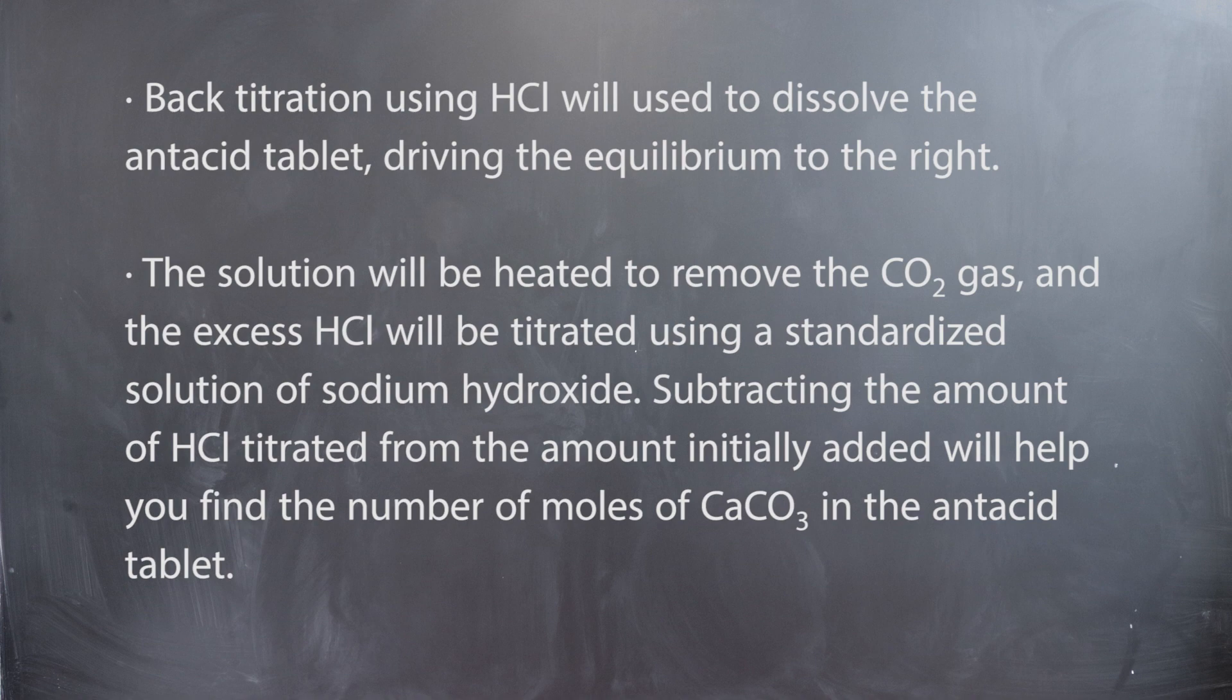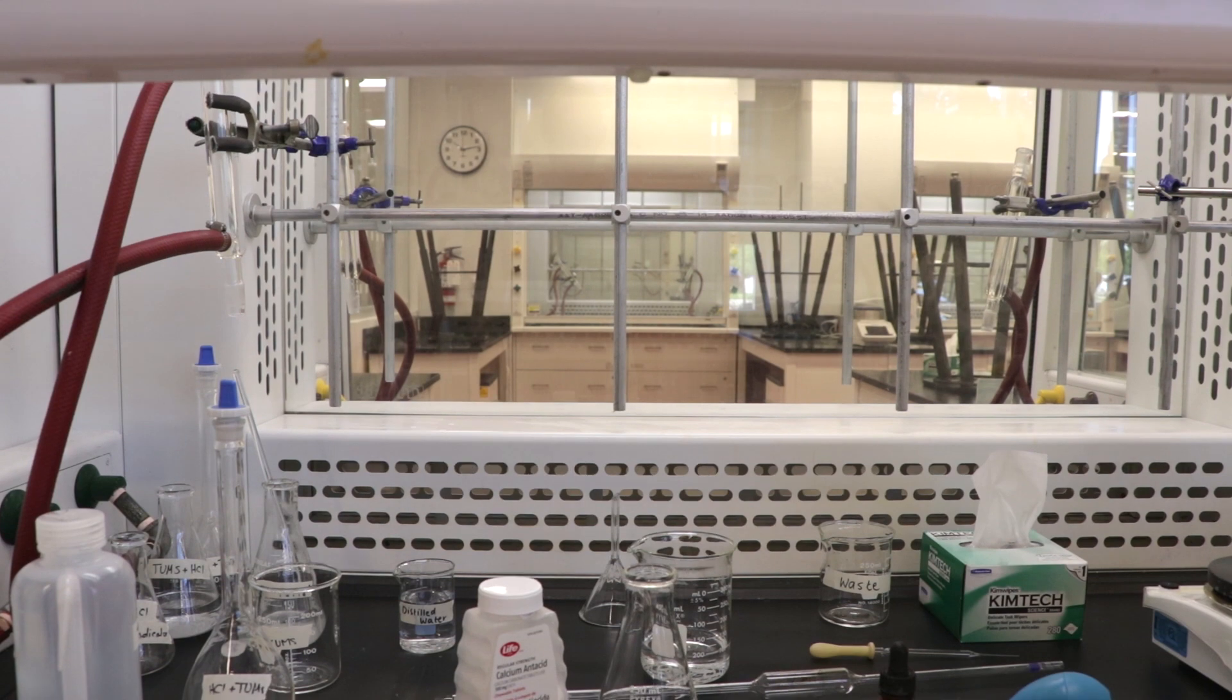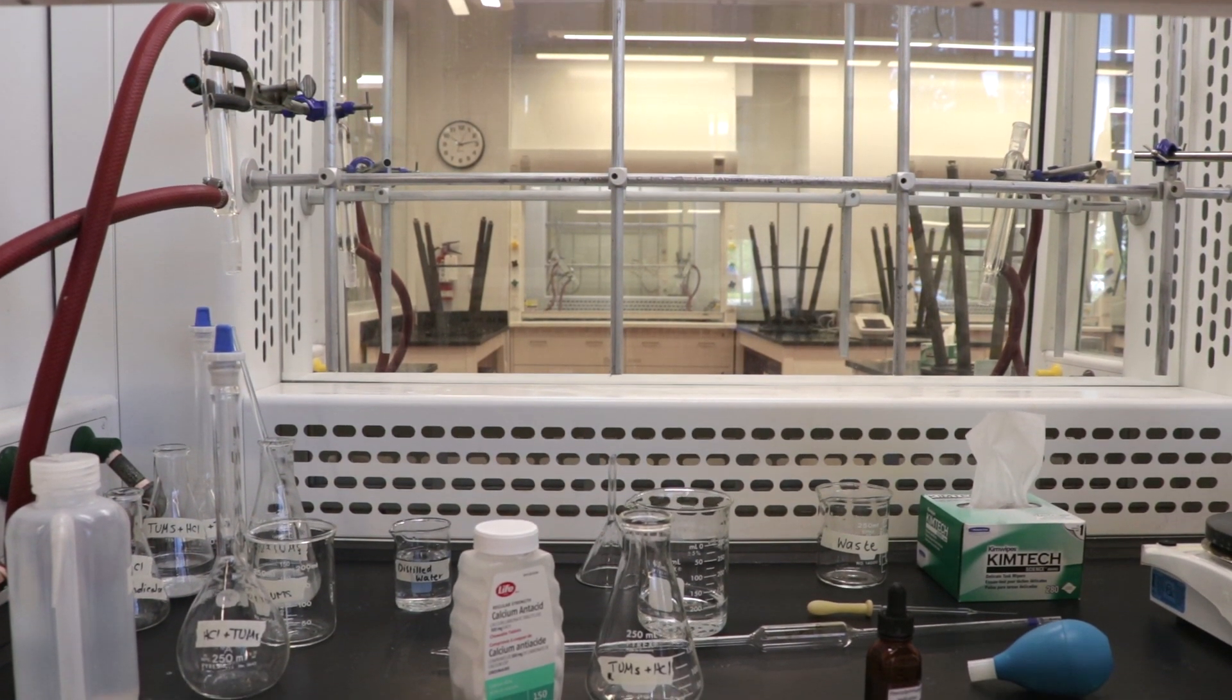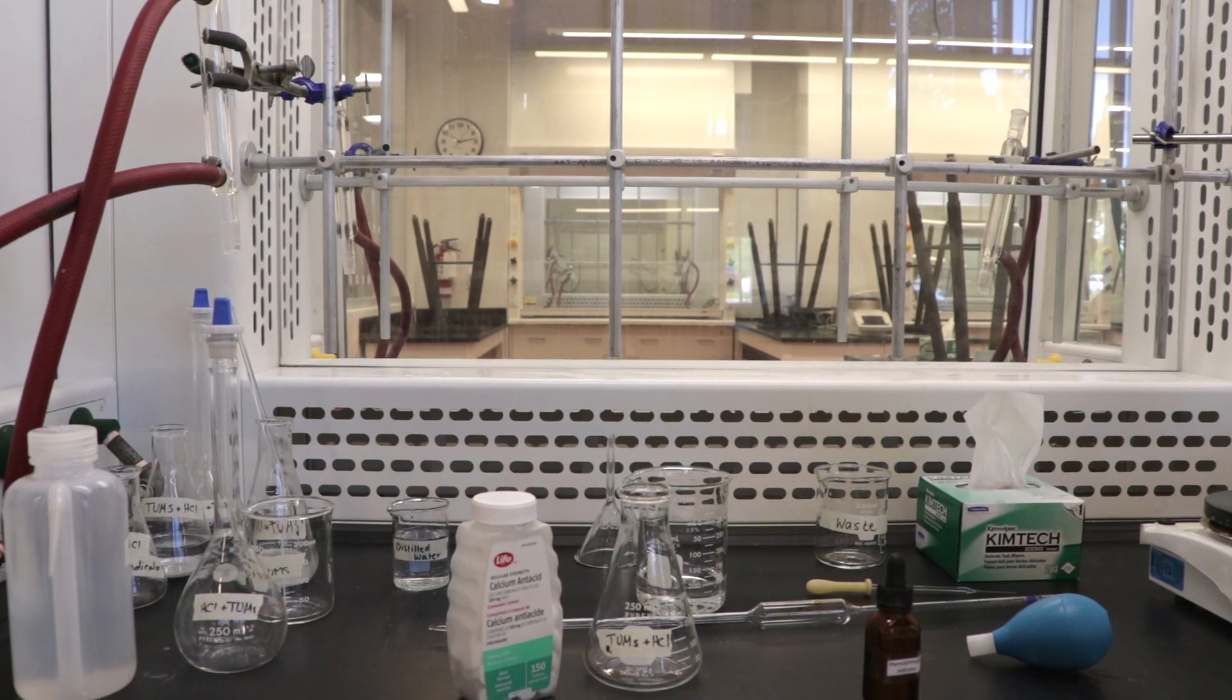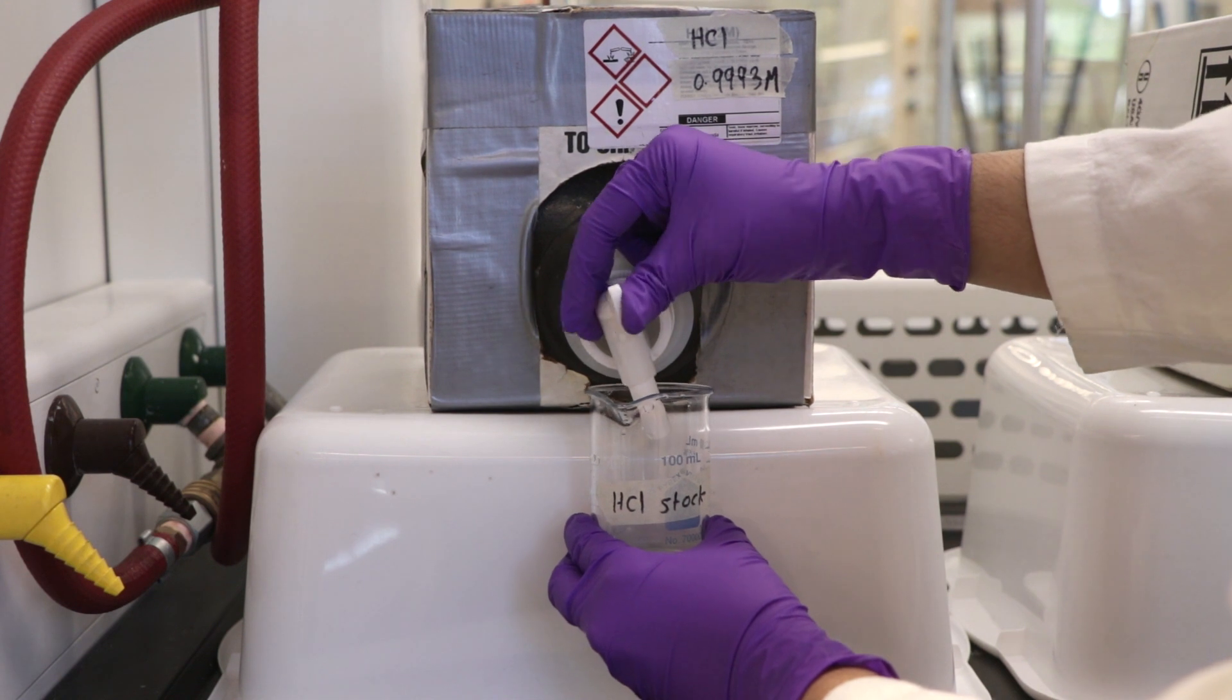First, obtain all the necessary equipment. Make sure you weigh the Tums in a weigh bottle on the analytical balance using weighing by difference. A link for the video is in the description below. Pour some stock HCl into a beaker and record the concentration.